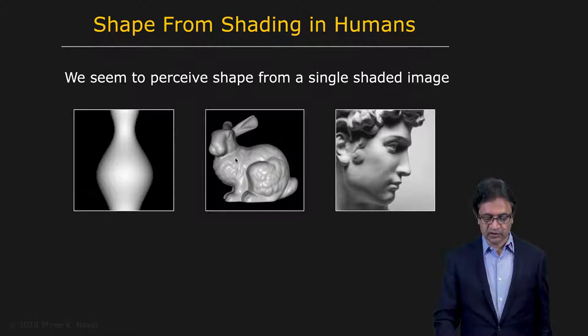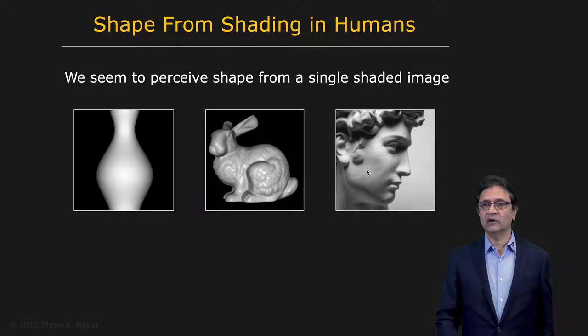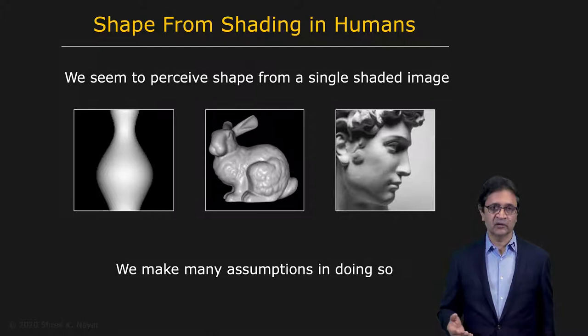We know what the shape of this bunny is and what the shape of the sculpture here is. In fact, even if I showed you a small piece of the sculpture — say the cheek of David here — you should be able to figure out what the undulations of the surface are within that small patch. It turns out that the only reason we are able to do this is because we make several assumptions along the way.